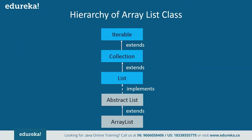Talking about ArrayList, it uses a dynamic array for storing the elements. It inherits the AbstractList class and implements the List interface. Then the List interface extends the Collection and Iterable interfaces in hierarchical order. So this is about the hierarchy of the ArrayList class.